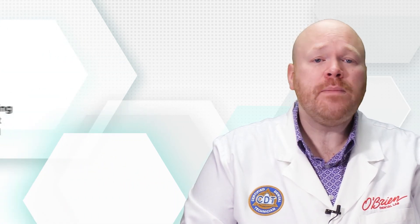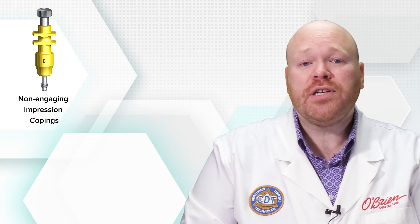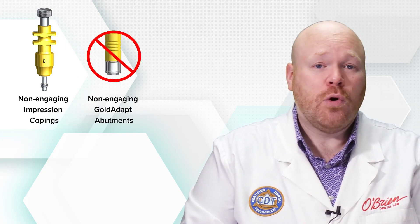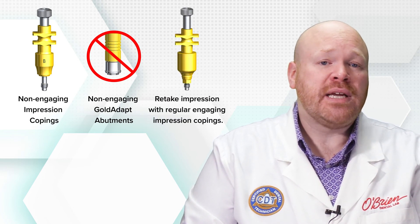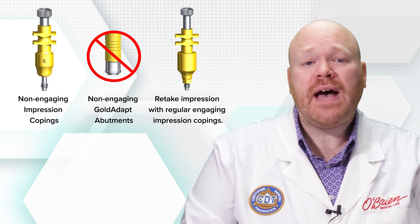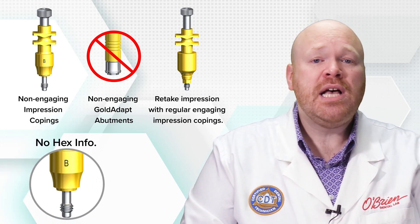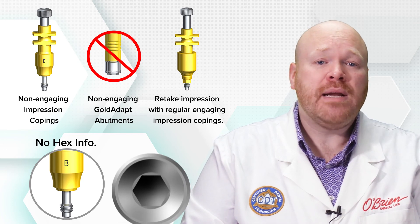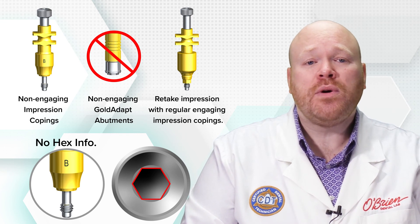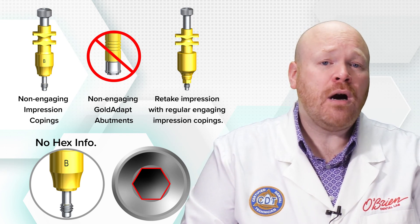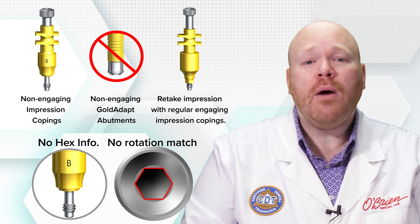It's important to note that if the impression is taken with the non-engaging impression copings, and then it's later determined that it will not be possible to use the non-engaging GoldAdapt abutments, the impression will need to be retaken with regular engaging impression copings. This is due to the fact that the non-engaging impression copings don't transfer the hex position, so it would be impossible for the lab to create a model that matches the rotational orientation of the implant, creating a situation where the position of the abutment on the model analog would not match how it seats on the actual implant.